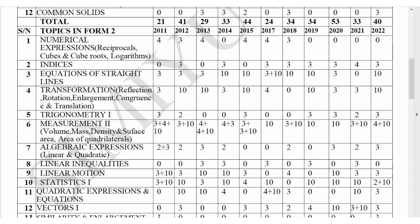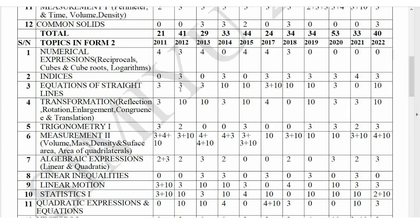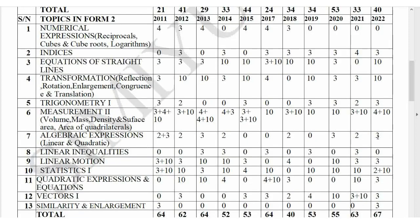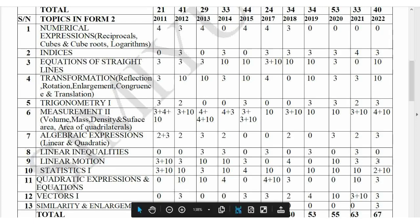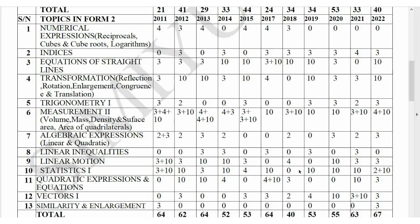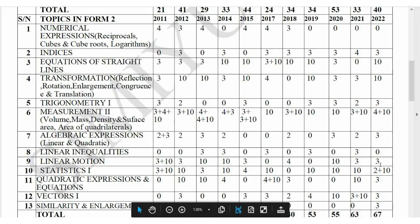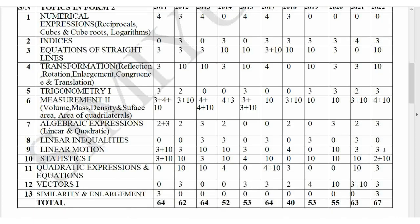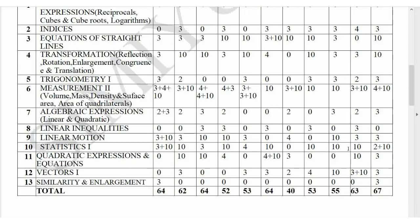Now let us look at Form 2 topics in Paper 1. Equation of a straight line — last year it was there for 10 marks in 2022. Look at this trend and you can predict the topics to expect. Algebraic expression and linear inequalities — last year linear inequalities was not there. Linear motion: you should expect that in Paper 1 this year for 10 marks, since it was not there last year. Topics like two vehicles coming to meet or going apart — expect that. Statistics 1 was there last year for 12 marks, so prepare well for it.